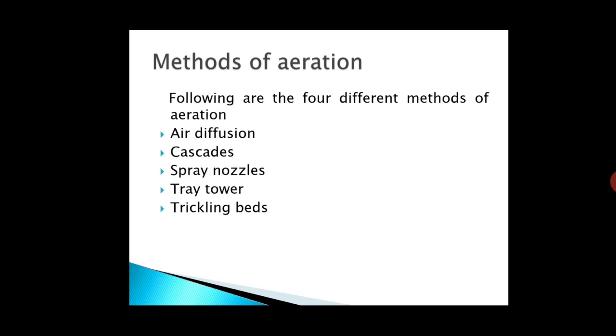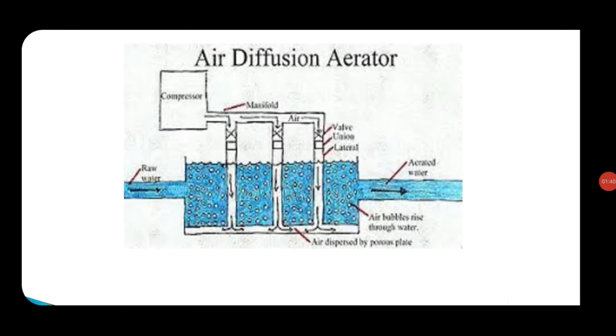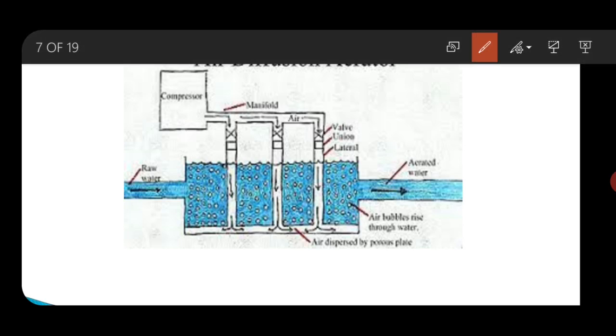Let us first discuss the air diffusion method of aeration. In this method, perforated pipes are installed at the bottom of the tank, and the compressed air from the compressor is blown through these pipes. These air bubbles, while coming up from the bottom of the tank, will come in contact with the water content in the tank.